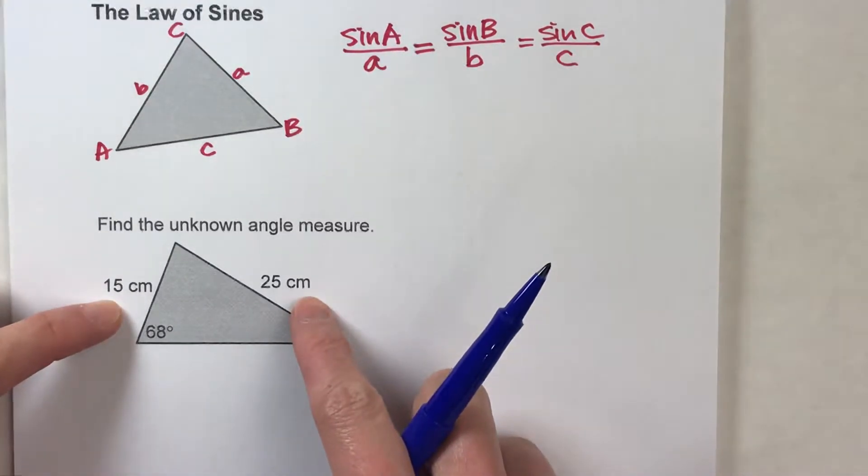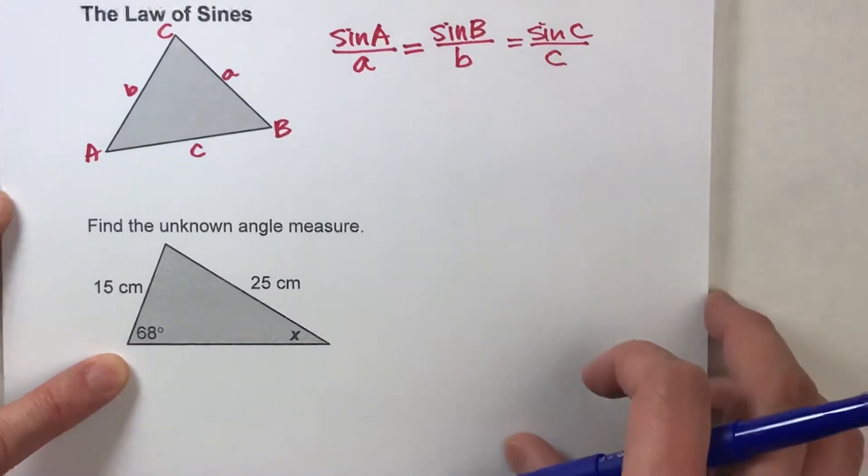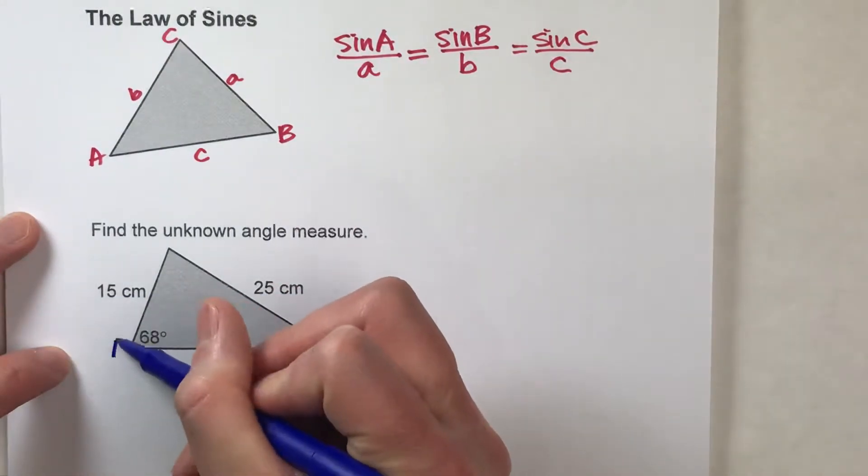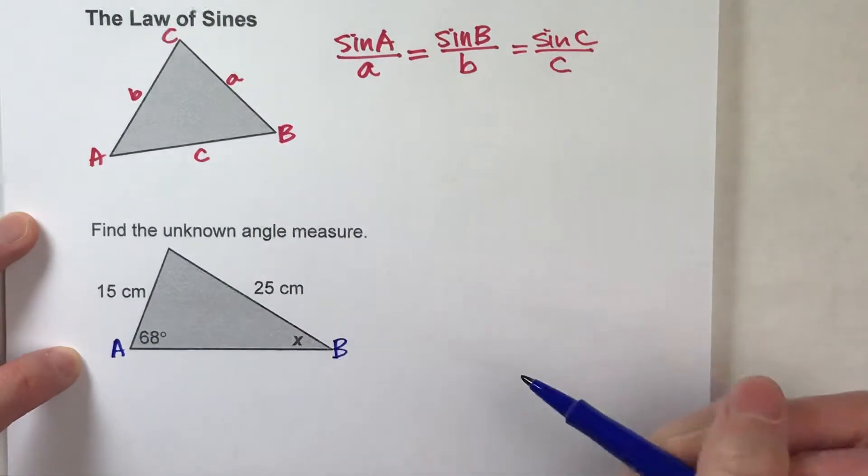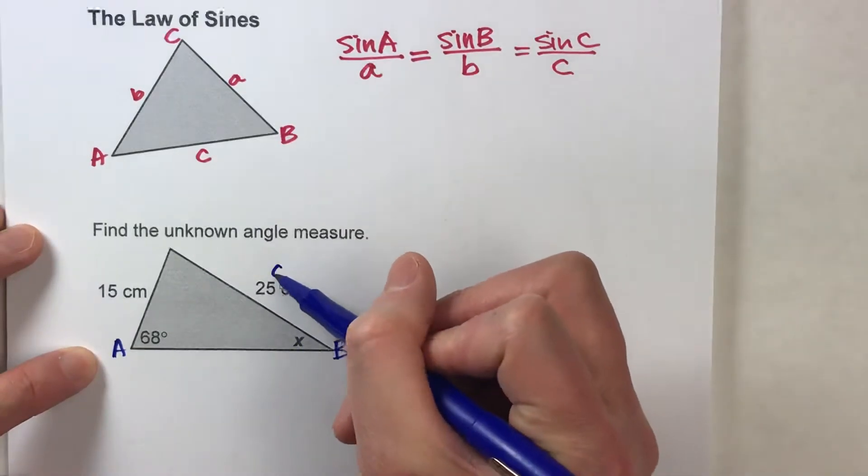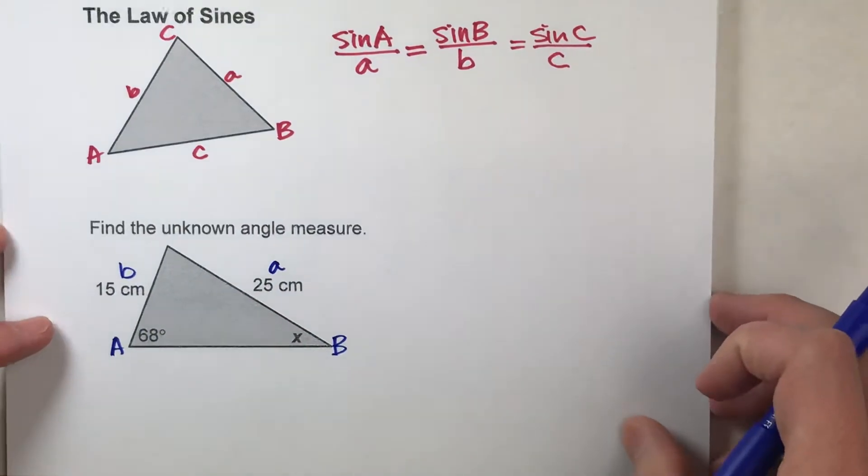We're given two side lengths, we're given one angle, and this is the angle we're trying to find. So, the first thing I like to do is label things that I'm working with. These are the two angles I'm working with, so I'm going to label them A and B. And the side across from angle A is little a. The side across from angle B is little b.